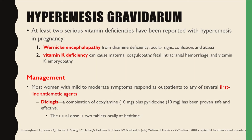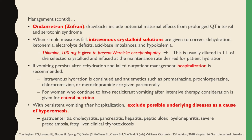Most women with mild to moderate symptoms respond as outpatients to several first-line anti-emetic agents, such as Diclegis, which is a combination of doxylamine plus pyridoxine, and has been proven safe and effective for pregnant women. The usual dose is two tablets orally at bedtime. Other anti-emetic agents include ondansetron or Zofran; however, drawbacks include potential maternal effects from prolonged QT interval and serotonin syndrome.